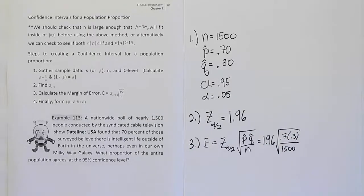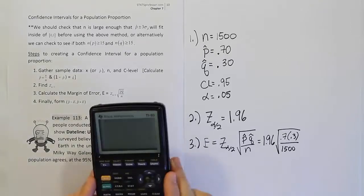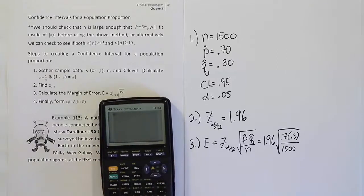So, we're going to have 1.96 times the square root of 0.7 times 0.3 divided by 1,500. Close up the square root, hit enter, and you have your answer, 0.02319.